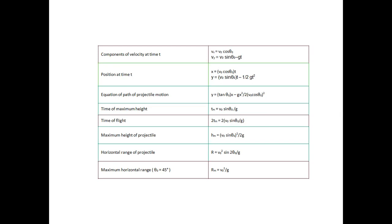To get position, the formula is velocity multiplied by time, using the components already found. The equation of the path — the trajectory — follows a parabola, so we use the equation of a parabola. Time to maximum height is the time taken from origin to the highest point. Time of flight is twice the time to maximum height, covering the journey from origin up and back down to the ground.